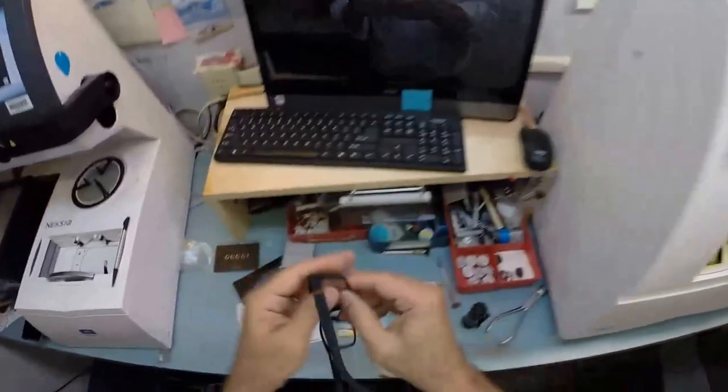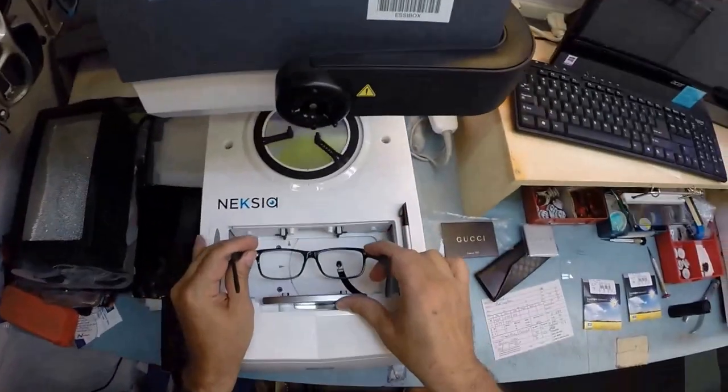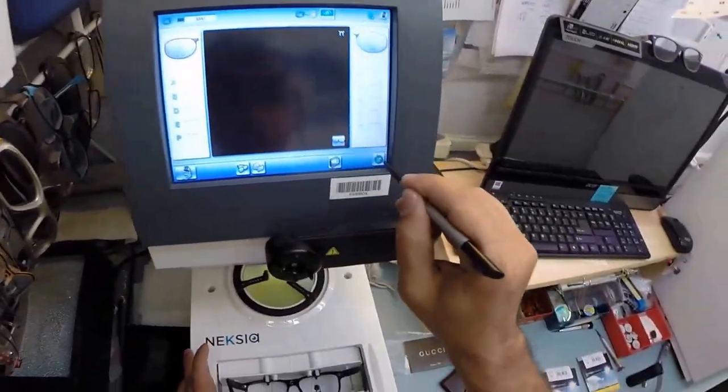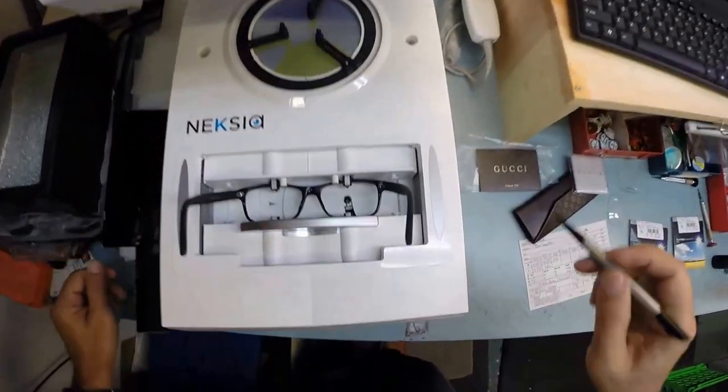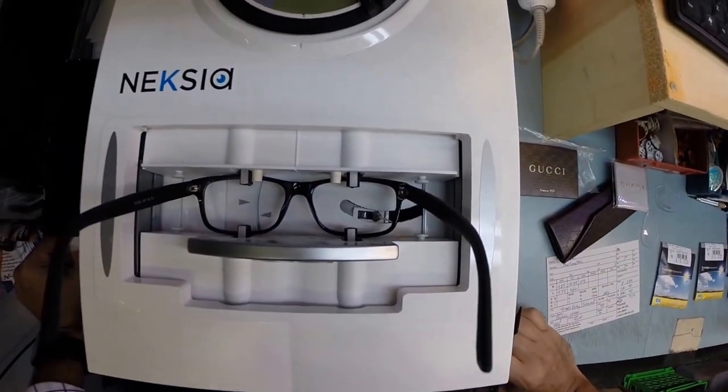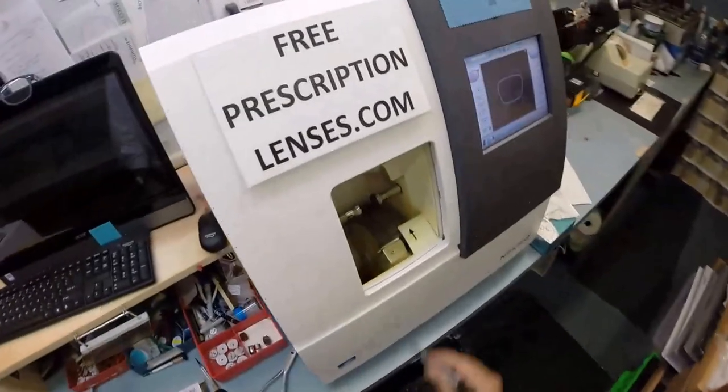For now I'm going to pop out the original demo lenses, one of which says Gucci. Let me go ahead and pop that out. I'm going to take your Italian frame and put it into the tracer element of my French edger and hopefully they won't start fighting. Hit the green button, the little stylus is going to pop up and trace the shape of the right side of the frame before moving over and doing the same thing on the left.